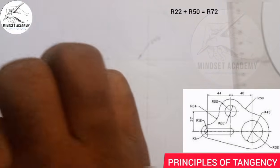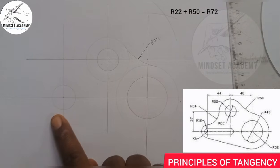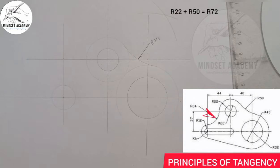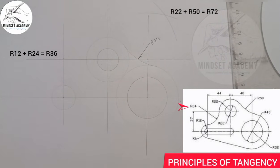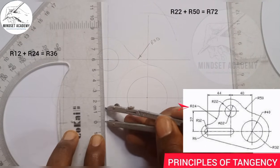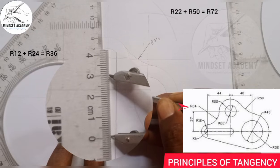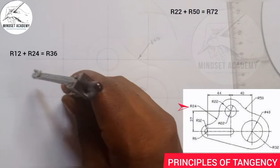This circle here is connected to this one, and it's going in — so it's external. I'm going to add the radius of 12 and 24, which gives us 36. The radius of 12 plus the arc going in, which is 24, equals 36. I'll measure 36 on my ruler — from 0, that's 30 and 36. I'll place it at the center here and strike an arc.